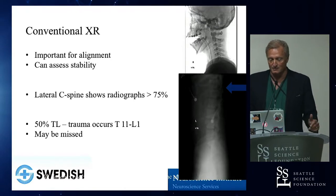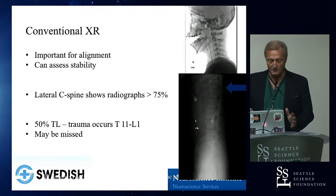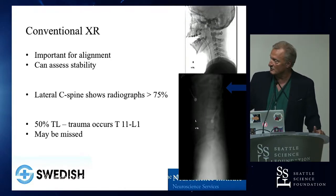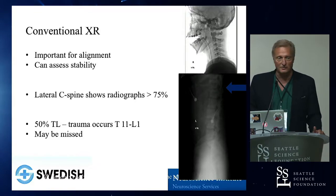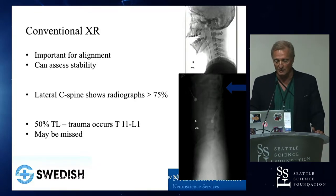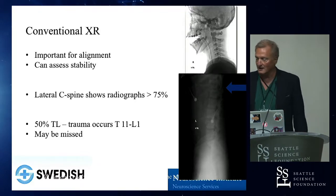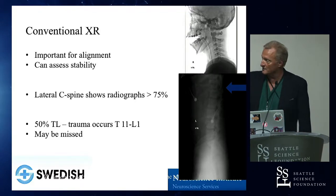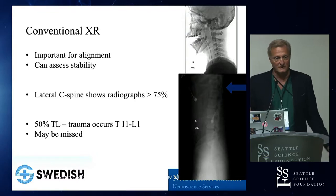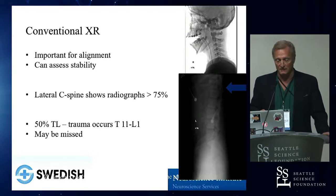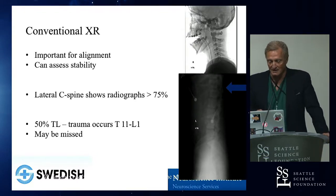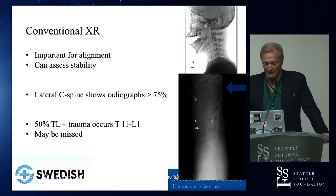Conventional X-rays remain important for alignment purposes. Remember that most of the thoracolumbar trauma happens at the thoracolumbar junction, as identified by Kojo. Lateral C-spine radiographs are still a very valid entity.